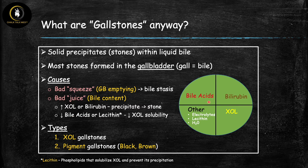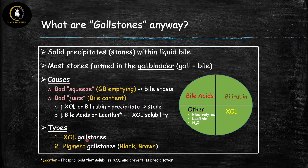Bile acids and lecithin are both important lipids that play a major role in solubilizing cholesterol. If you don't have enough of them in bile, cholesterol will not solubilize — it will precipitate out and form stones. There are two major types of gallstones: cholesterol gallstones and pigment gallstones, and for the rest of the video we'll go through their pathophysiology and main risk factors.